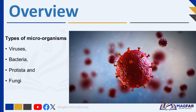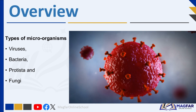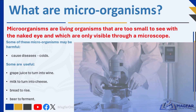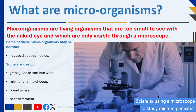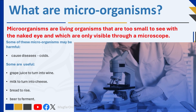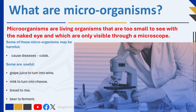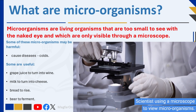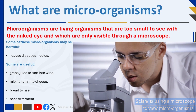Microorganisms are living organisms that are too small to see with the naked eye and are only visible through a microscope. Many living organisms such as plants and animals are large enough to see with the naked eye. Microorganisms, however, are far too small unless you use a special magnifying instrument such as a hand lens or a microscope. The word 'micro' means very small, and 'organism' refers to living things.